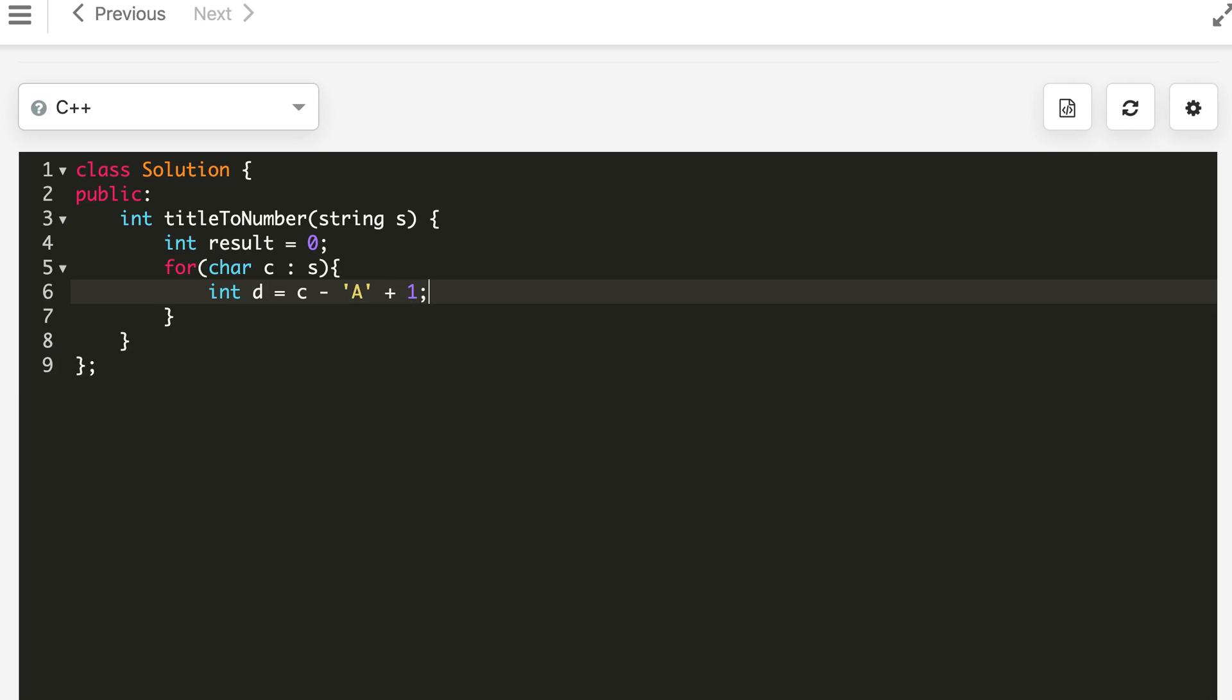For A it will be 0, B it will be 1, so we need to add 1. Then whatever was the result, we multiply by 26 plus add the new digit. And this is how we do any conversion - whether it is hexadecimal, decimal, binary, or anything. And return result.